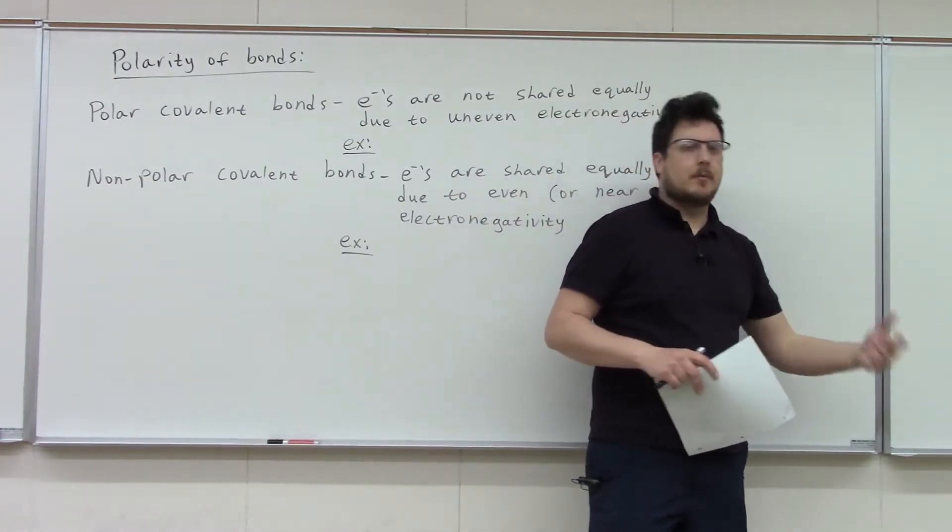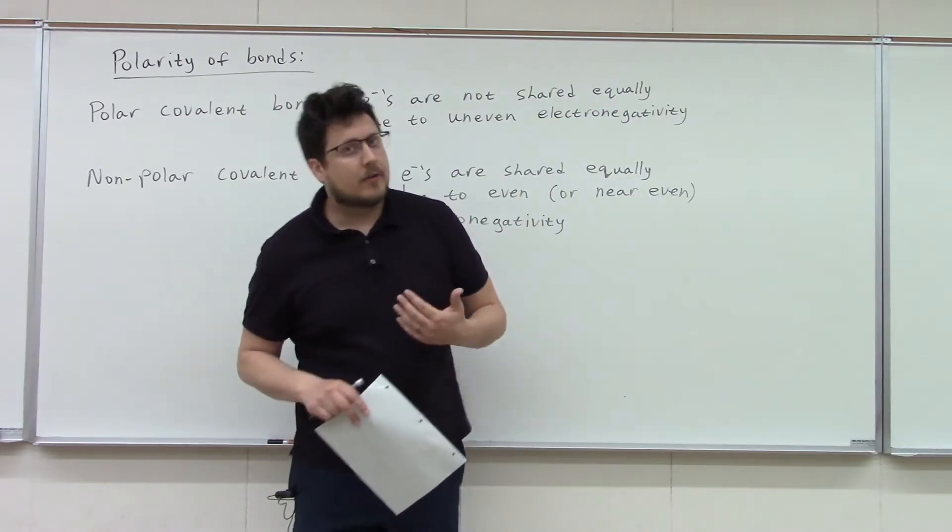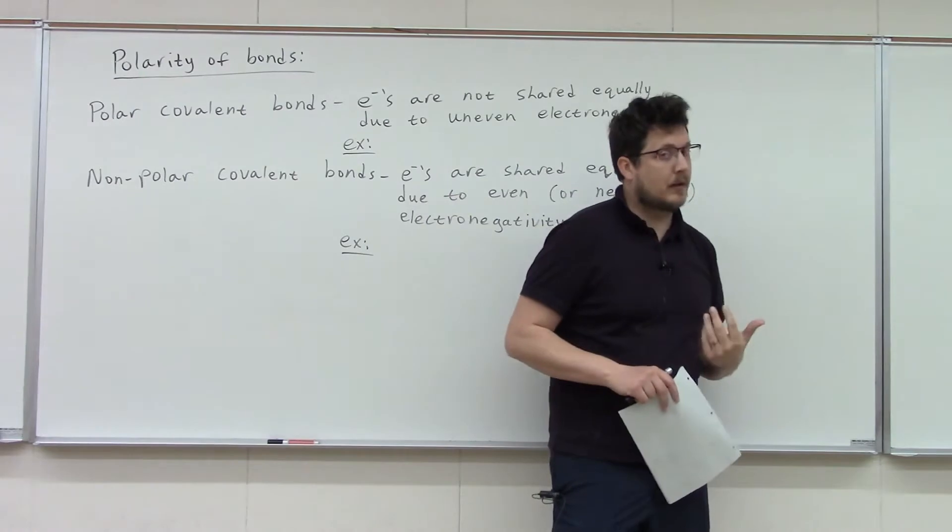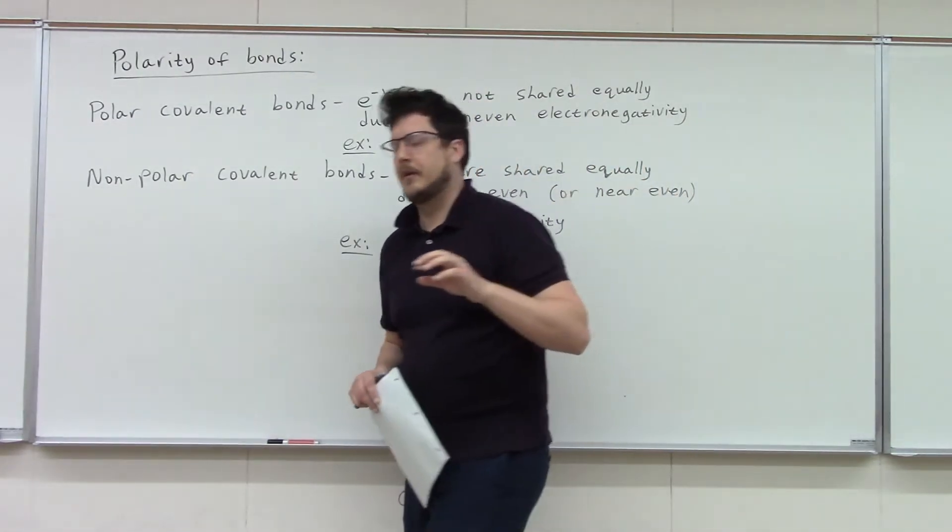And essentially, just the larger the number, the better, the lower the worse. Metals have very, very low electronegativity. They're not really going to fight for those electrons. And so they don't typically engage in covalent bonding. They tend to form ionic compounds, as we talked about earlier.